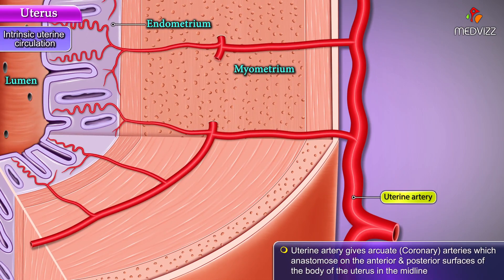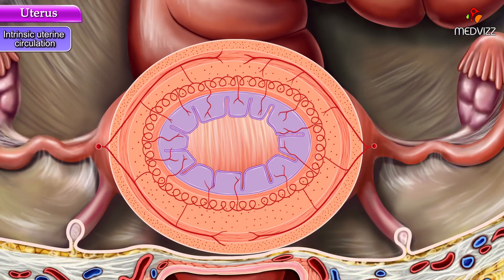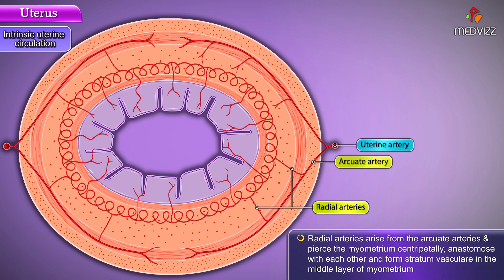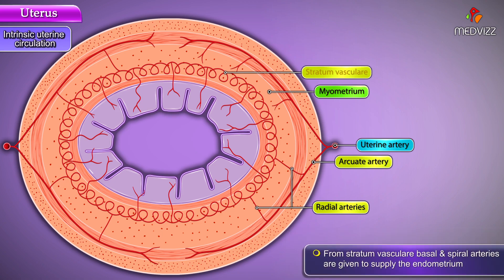The uterine artery gives arcuate or coronary arteries, which anastomose on the anterior and posterior surfaces of the body of the uterus in the midline. Radial arteries arise from the arcuate arteries and pierce the myometrium centripetally, anastomose with each other, and form the stratum vasculare in the middle layer of the myometrium. From the stratum vasculare, basal and spiral arteries are given to supply the endometrium.